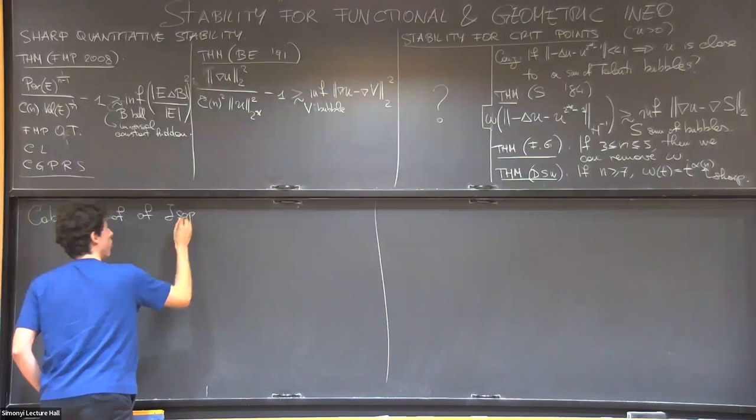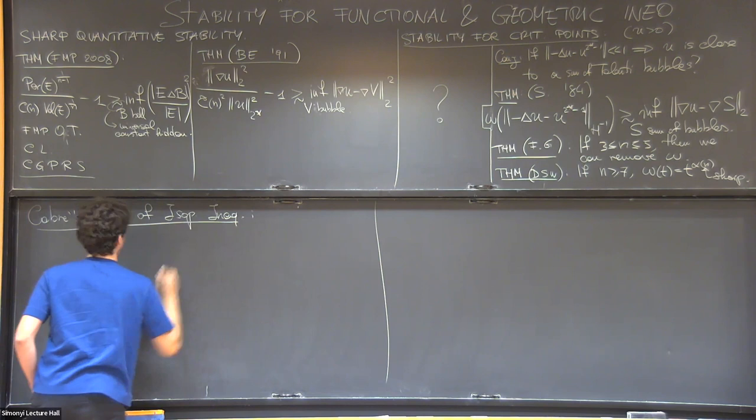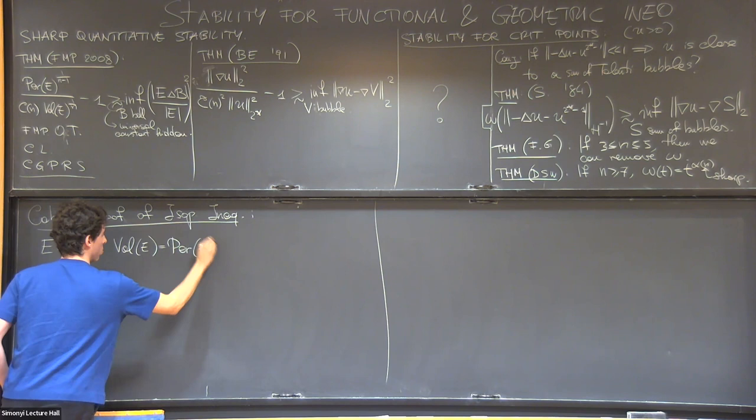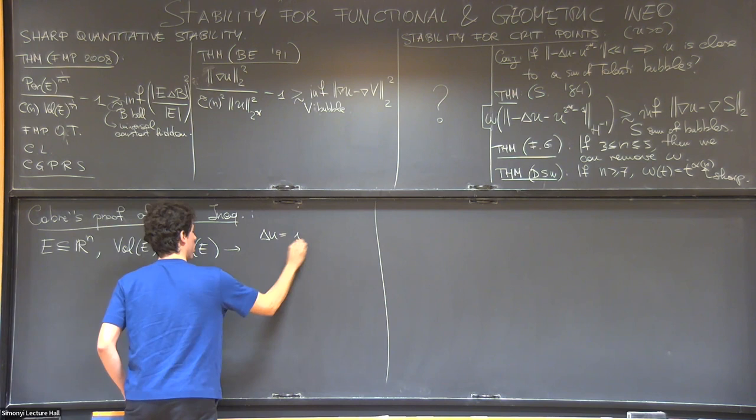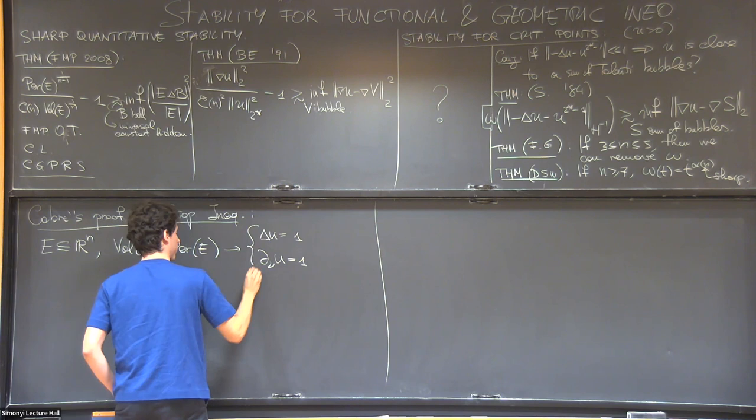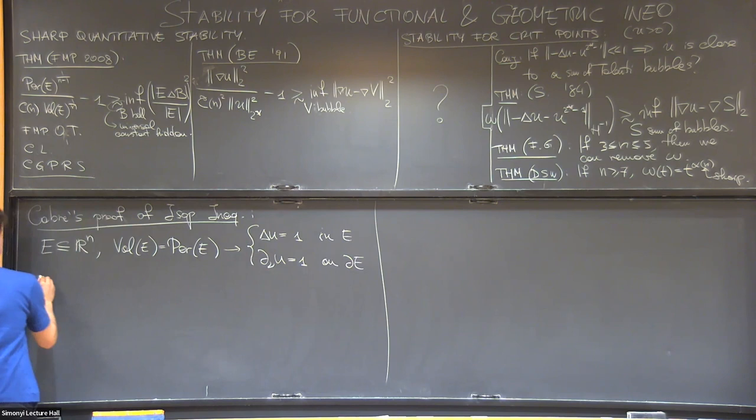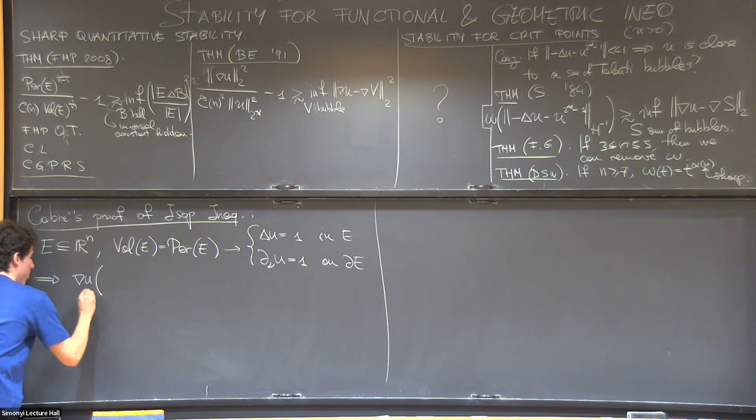And as you'll see, the proof can be given in the last two minutes of a talk. So you take a set E and normalizing, you may assume that the volume is equal to the perimeter. It is easy to obtain. And therefore, these guarantee that you can solve the following system. This is analysis 2.